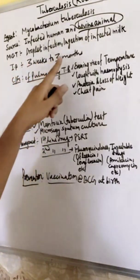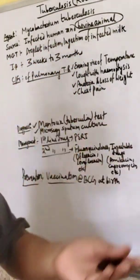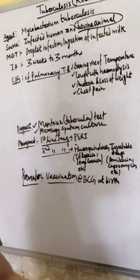What is the incubation period of TB? 3 weeks to 3 months. It is average. It is variable.